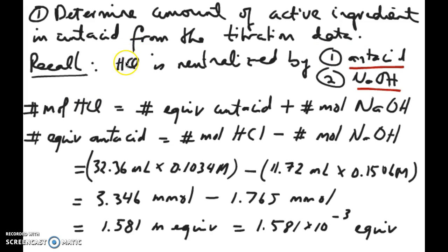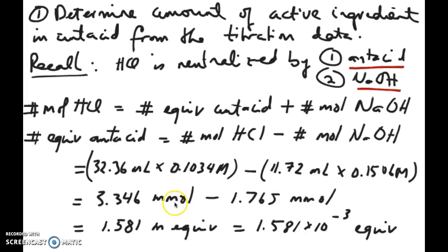So that's what's written right here. We're not going to use number of moles to quantify the amount of bases in the antacid, but we're going to use this unit called equivalents. The number of equivalents of antacid is the number of moles of HCl minus the number of moles of NaOH. Using the numbers given in the question, we can calculate the two number of moles — remember that number of moles is just multiplying volume times molarity. I used millimoles instead of moles to make the calculation a little easier. So I have this many millimoles of HCl, this many millimoles of NaOH. Subtract them and I get this many milliequivalents.